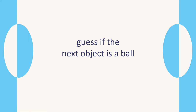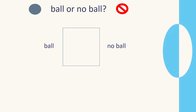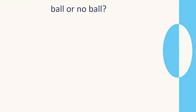We'll start off playing a game. You've got to see if the next object is a ball. Have a guess — is it a ball or not a ball? We're going to display an image. It's going to be either a ball or no ball. Let's go for ball. Yes, that's correct. Now we're going to do that 10 times. Okay, let's play.